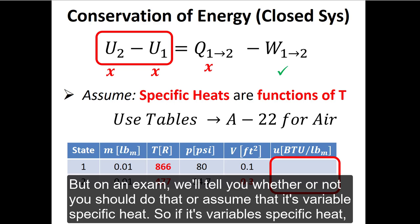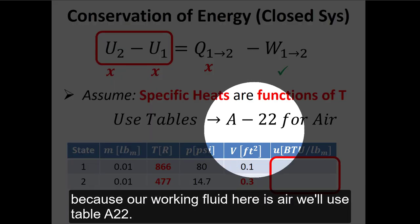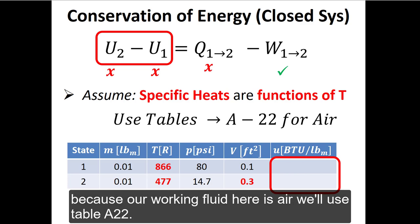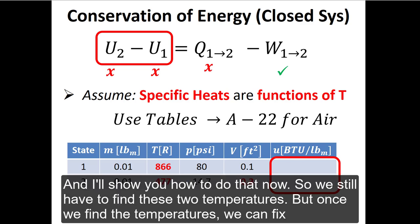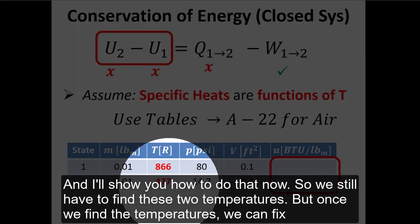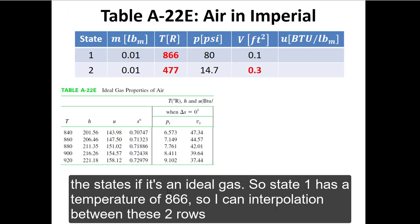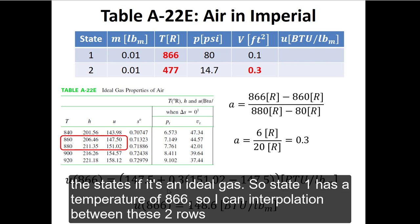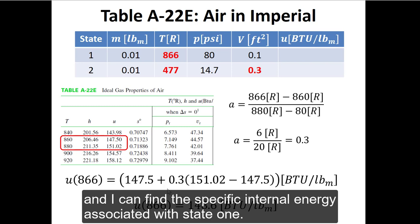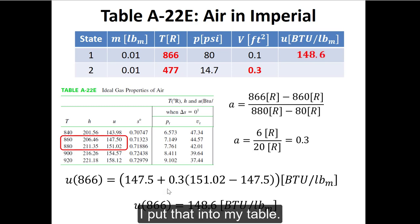So if it's variable specific heat, because our working fluid here is air, we'll use table A22 and I'll show you how to do that now. We still have to find these two temperatures, but once we find the temperatures we can fix the states if it's an ideal gas. So state one has a temperature of 866. I can interpolate between these two rows and I can find the specific internal energy associated with state one. I put that into my table.